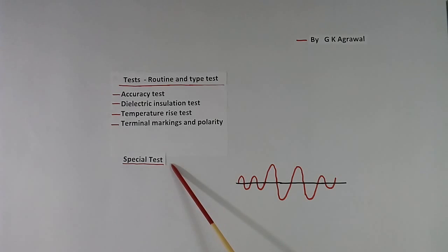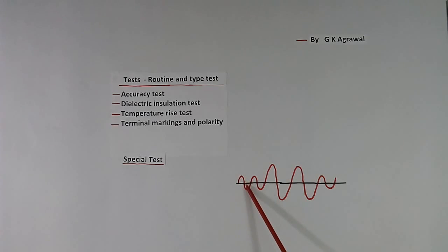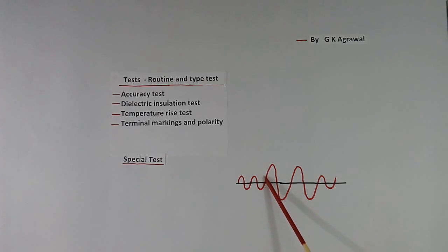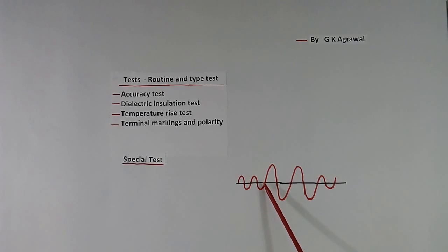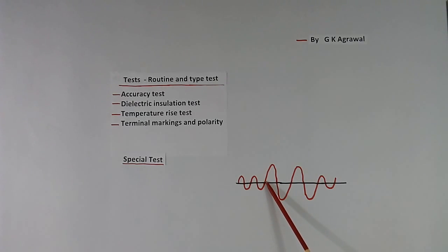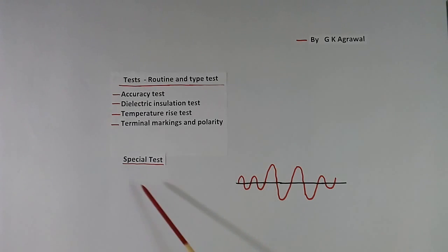Then special tests, if any. For example, here I have shown an AC voltage where the voltage is low, then suddenly goes up, then comes down again. In control applications, we want a fast response, so we check — when voltage goes from low to high, whether the output also responds properly or if there is a delay. That is called the response time test. This is one type of special test; there can be other special tests as well.